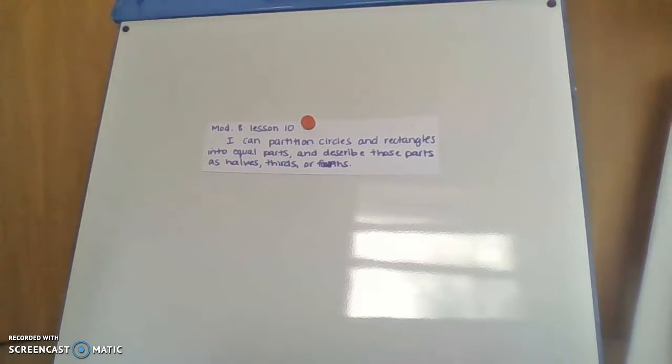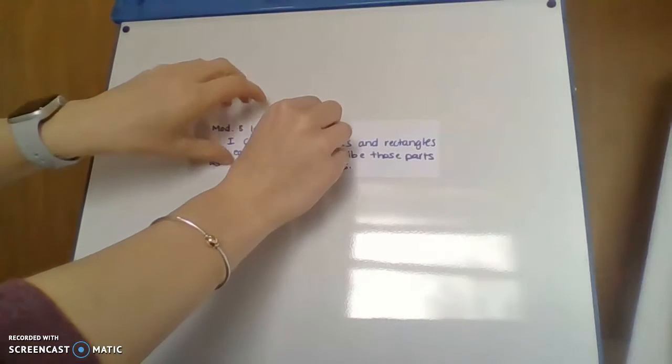Your learning target says, I can partition circles and rectangles into equal parts and describe those parts as halves, thirds, or fourths. So we're going to focus on circles and rectangles and partitioning or breaking them up into halves, thirds, and fourths.